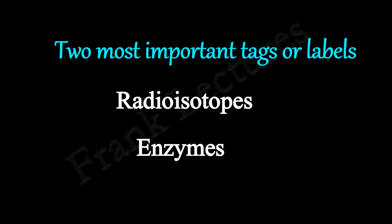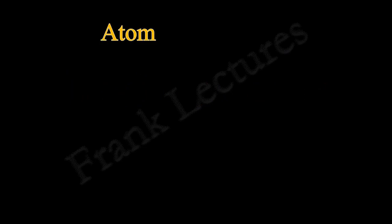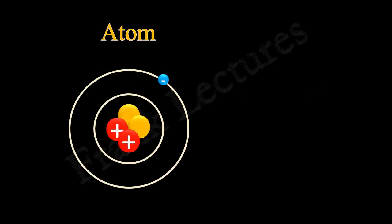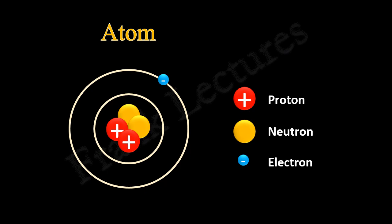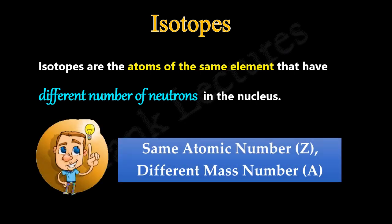Let's understand the role of two important tags or labels: radioisotopes and enzymes. Radioisotopes are used in radioimmunoassay. An atom is composed of three subatomic particles: proton, neutron, and electron. The nucleus of an atom, which is made up of protons and neutrons, together makes the mass of the atom. Isotopes are atoms of the same element that have a different number of neutrons in the nucleus. That means isotopes of the same element have the same atomic number but different mass number.